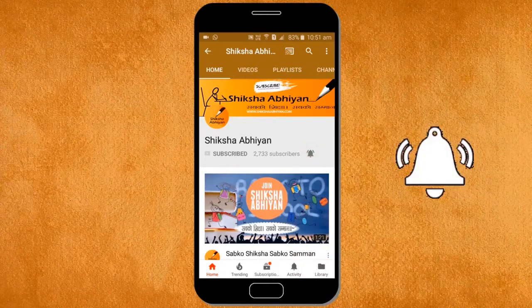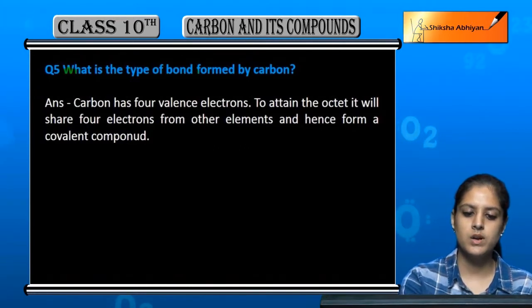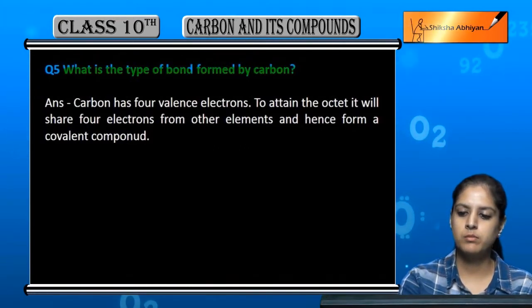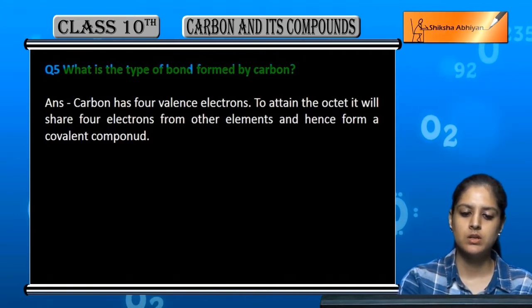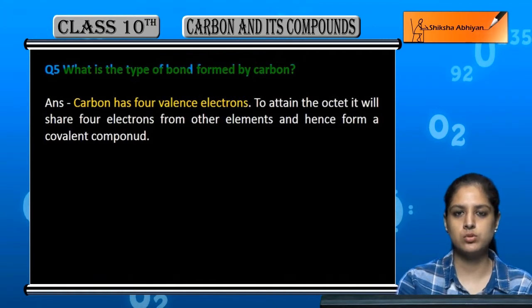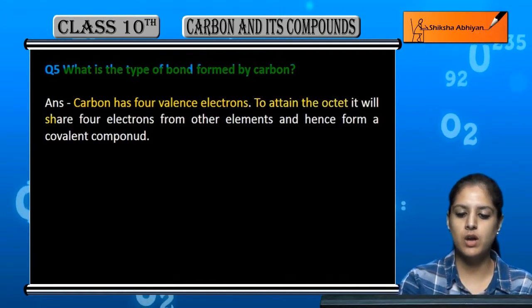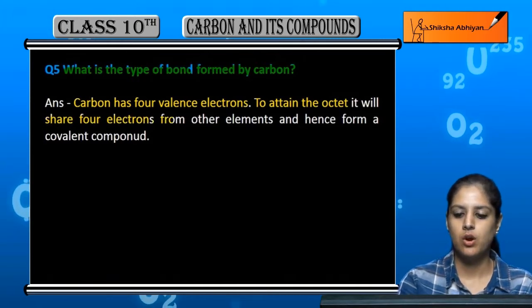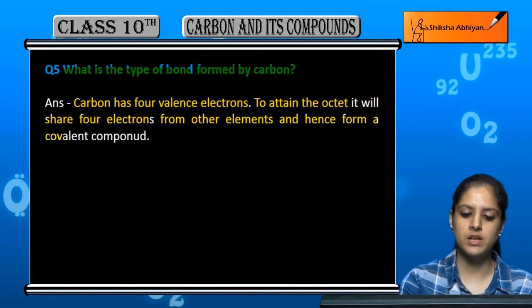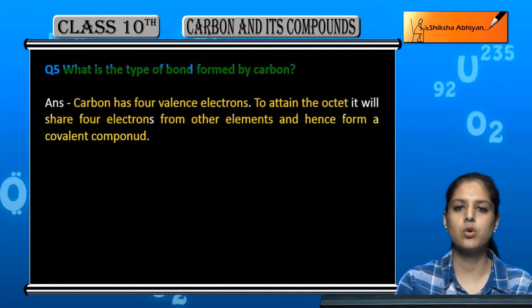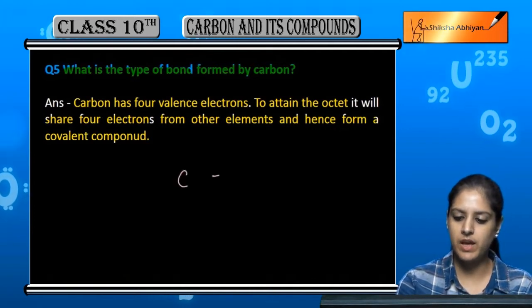Question 5: What is the type of bond formed by carbon? Carbon has four valence electrons. To attain the octet it will share four electrons from other elements and hence form a covalent compound. This sharing bond is called a covalent bond. For example, if we show the bonding between C and H...